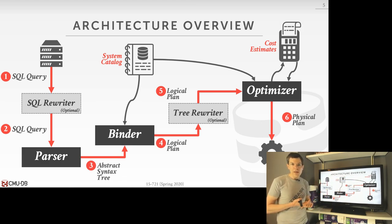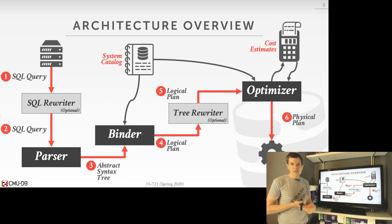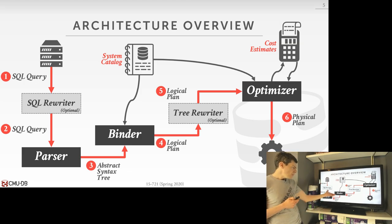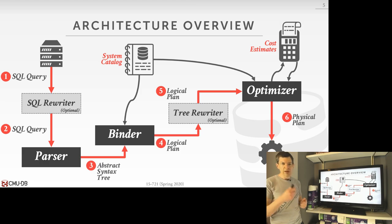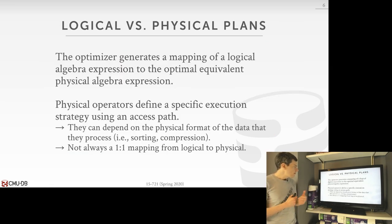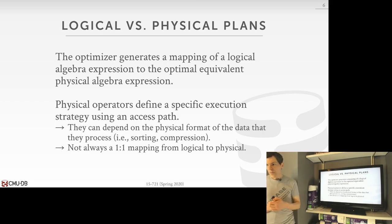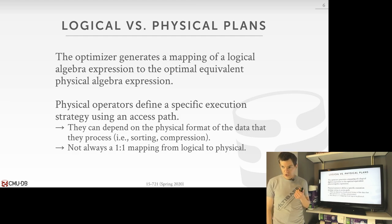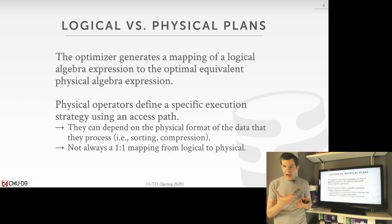We're mostly focusing on the tree rewriter and the optimizer. SQL rewriting is mostly done for redirecting queries — it's more like control-plane stuff, not necessarily for execution optimization. The binder is just looking up table names and things like that. Now let's discuss the distinction between the logical and physical plan, because this will come up multiple times when we talk about query optimizers.